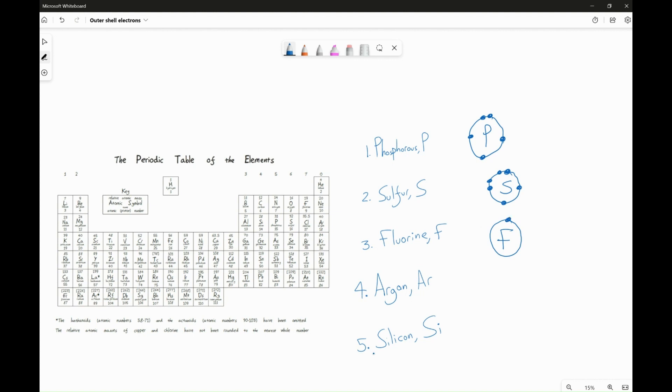Fluorine, as you can see, I'm going around in a clockwise order, has three paired and one single. Argon, and it can form one bond.